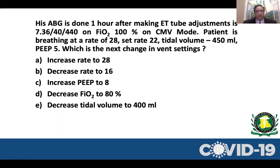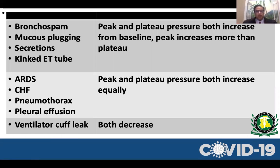For troubleshooting: if peak pressure rises but plateau pressure does not change proportionally, and you have a kink in the tube, think bronchospasm or mucus plugging. If both peak and plateau pressures rise in equal proportion, think underlying pulmonary conditions like ARDS, pneumothorax, or CHF. If both peak and plateau pressures are decreased, that indicates a cuff leak.